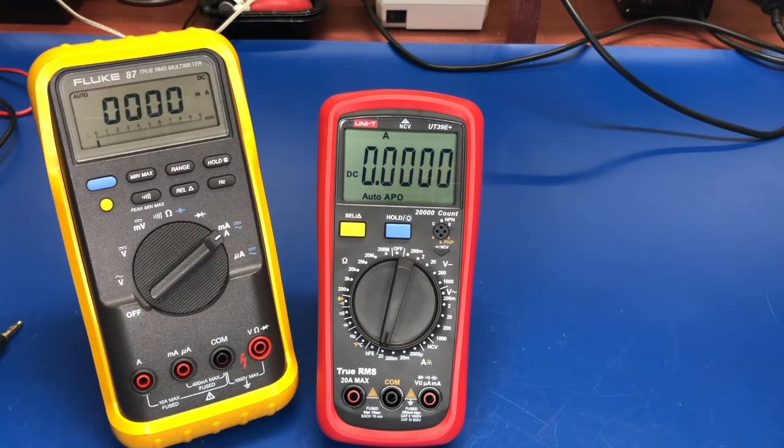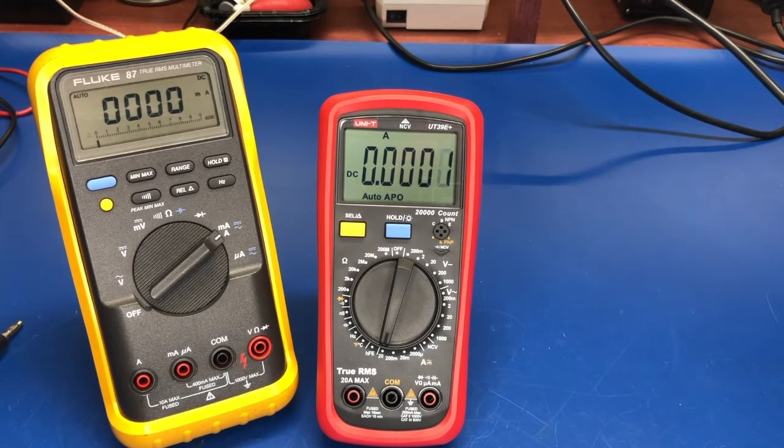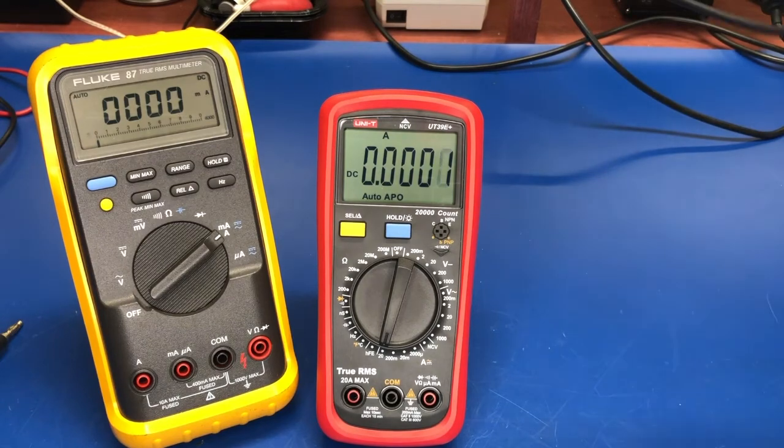All right. Another test. Both of these will do frequency. I don't really look at a multimeter as my go-to for a frequency counter, but they both do it. So we're going to take a look. So I've got my Tektronix CFG 253 function generator, and right now we're putting out about a 1 kilohertz sine wave.